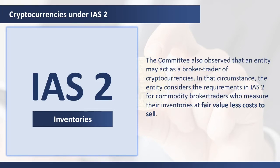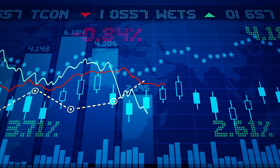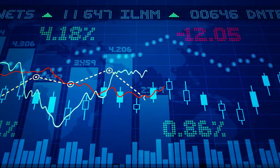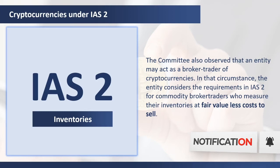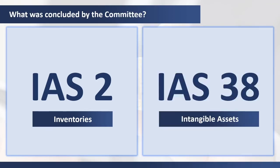The committee also observed that an entity may act as a broker-trader of cryptocurrencies. In that circumstance, the entity considers the requirement of IAS 2 for commodity broker-traders, who measure their inventories at fair value less cost to sell. IAS 2 states that broker-traders are those who buy or sell commodities for others or on their own account, where inventories are principally acquired with the purpose of selling in the near future and generating a profit from fluctuations in price or broker-traders' margin.